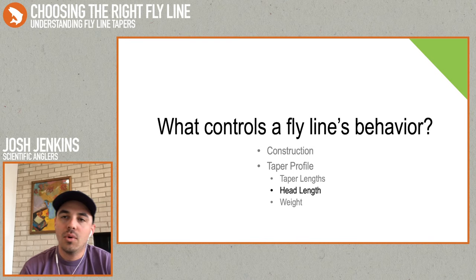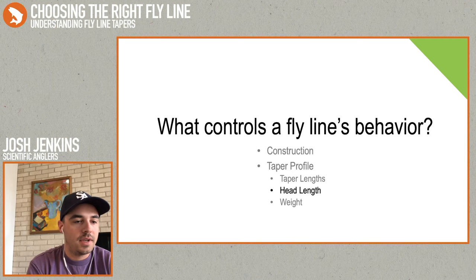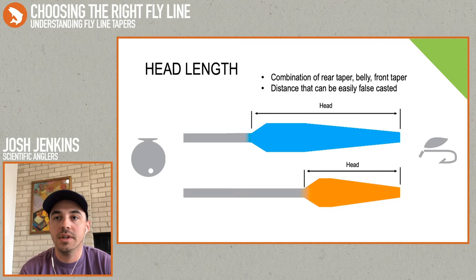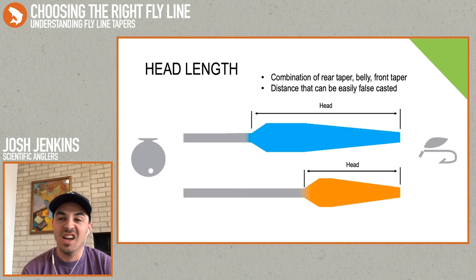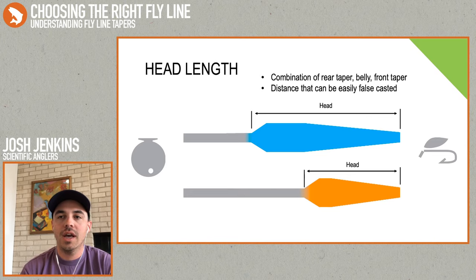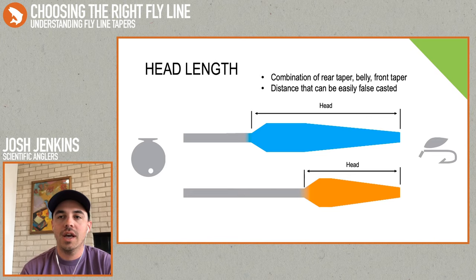The second point in taper profiles is the head length. The definition of the head length is the combination of any front tapers, any bellies, and any rear tapers. Sometimes we can have compound rear tapers or compound front tapers with two or more different kinds of tapers, and we can even have two bellies. On a weight forward line, the head is defined as anything except the running line. The head length determines how much line I can easily false cast — if I have a long head length, like our Trout Taper or Infinity Taper, I'm going to be able to easily aerialize more line while false casting than I could with a short head line.